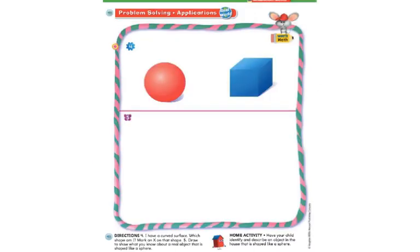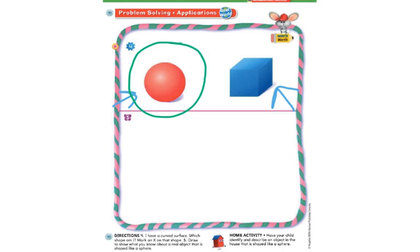Let's move on to the last page, number four. 'I have a curved surface — which shape am I? Circle that shape.' We have one shape right here and one shape right here. We're looking for the shape that has a curved surface. The sphere right here has a curved surface. Now, the last activity — if you have a blank piece of paper and would like to practice drawing one of these, you can.